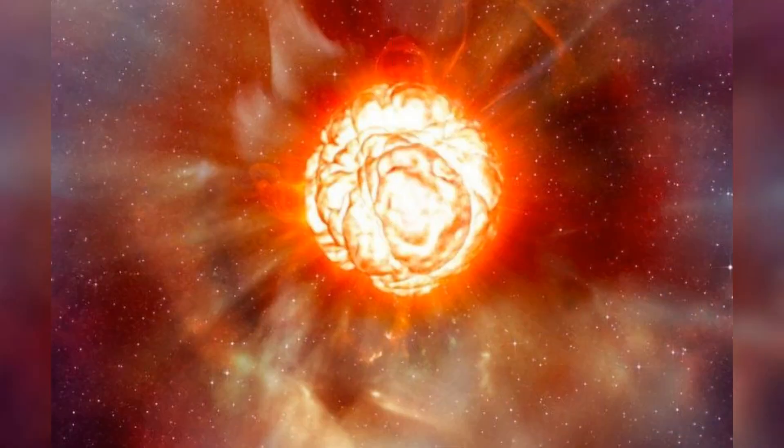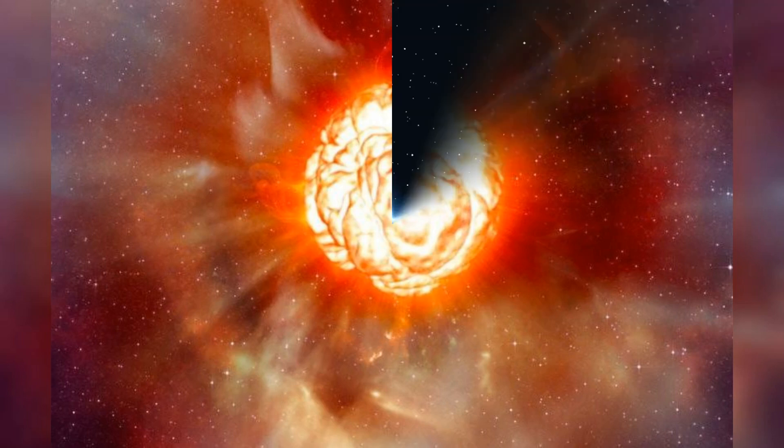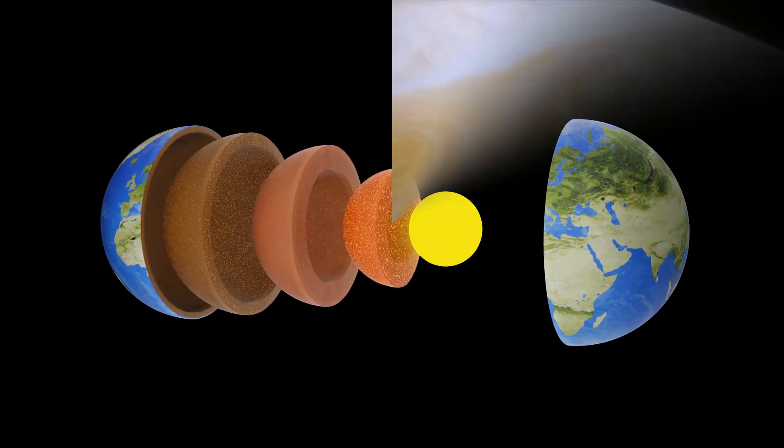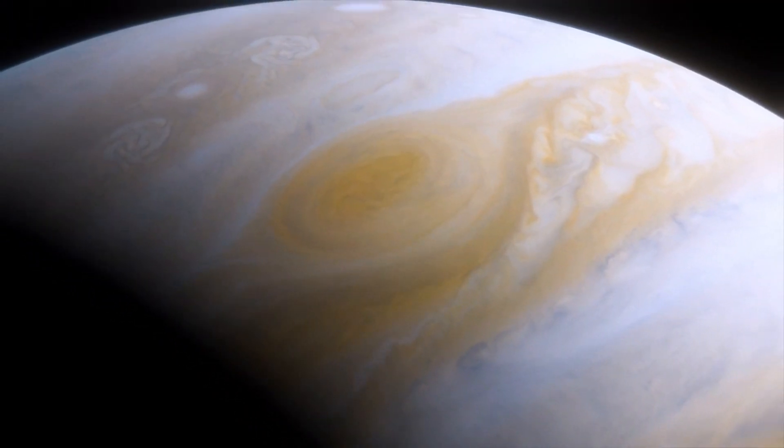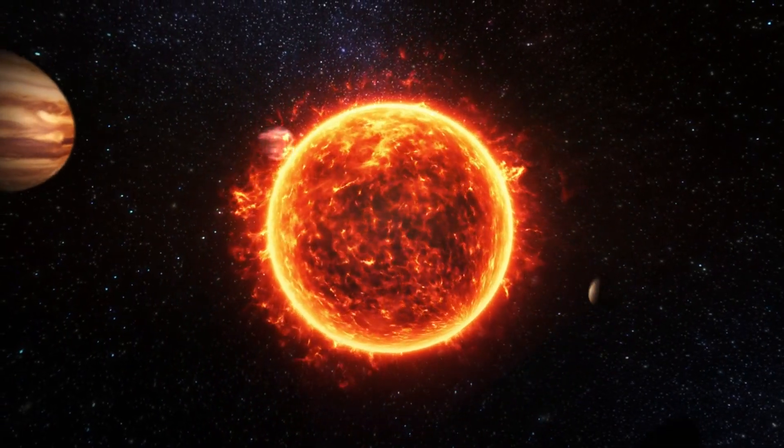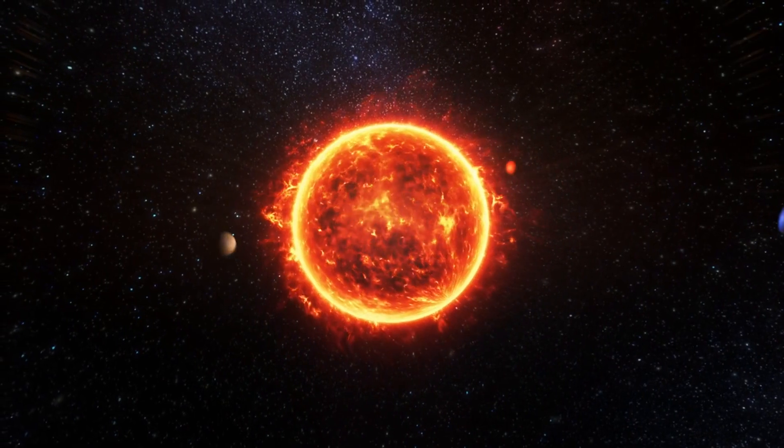Betelgeuse has captivated humanity for centuries with its immense size and distinctive red hue. Astronomers and amateur stargazers alike have been enthralled by this celestial giant, which, if placed at the center of our solar system, would extend beyond the orbit of Jupiter. In late 2019, Betelgeuse experienced an unprecedented dimming event, losing a substantial portion of its brightness.